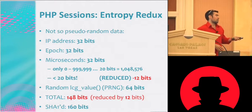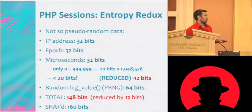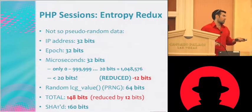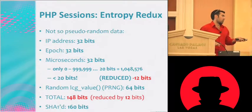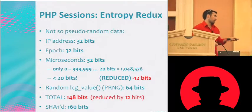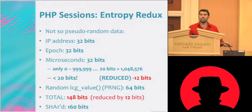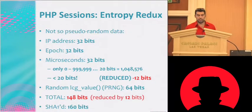So really, it's not 32 bits — it's actually 20 bits of entropy here. We can actually reduce 12 bits of entropy and reduce from 160 to 148. That's pretty cool, but 148 is still a big number.